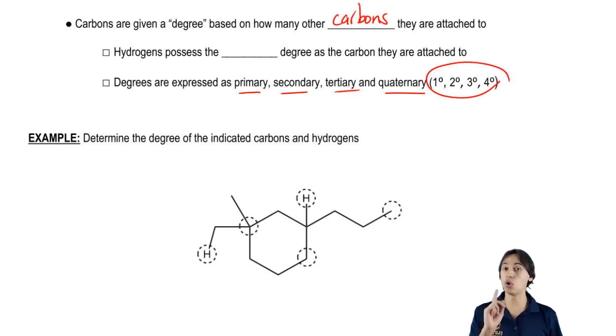Then hydrogens, because hydrogens always have one bond – remember that hydrogens are only happy with one, whereas carbons always have four bonds but they could be bonded to other things besides carbon. So hydrogens are just going to possess the same degree as the carbon that they're attached to.